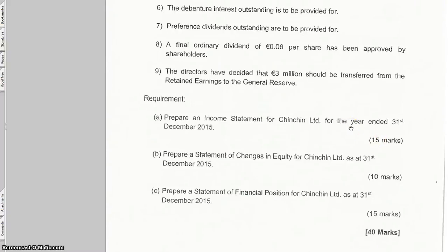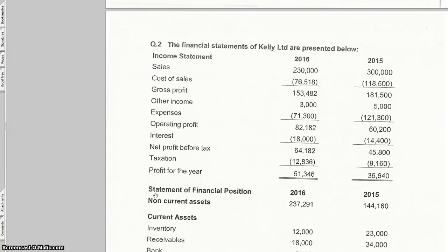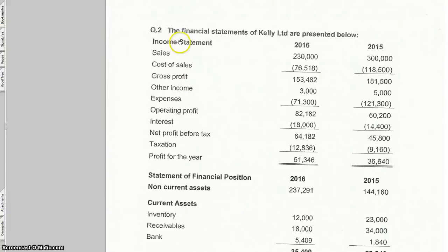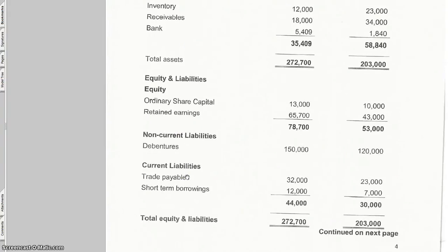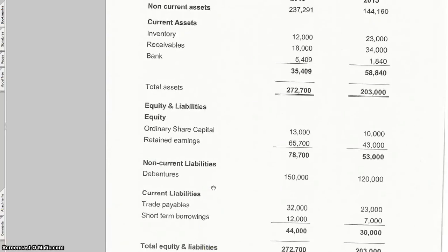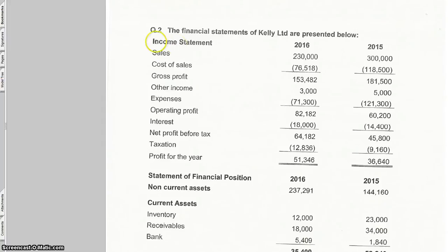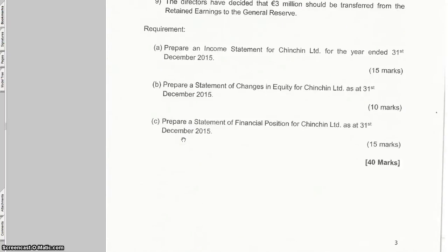This screencast will show you how to get the format for each of these three things: the income statement, the statement of changes in equity, and the statement of financial position. Because if you get the format right, it's a case of just filling it out. To help you get the format, we're going to look at question 2, which gives you an income statement and a statement of financial position and asks you to prepare ratios. We're interested in the fact that it gives us most of the format we need.